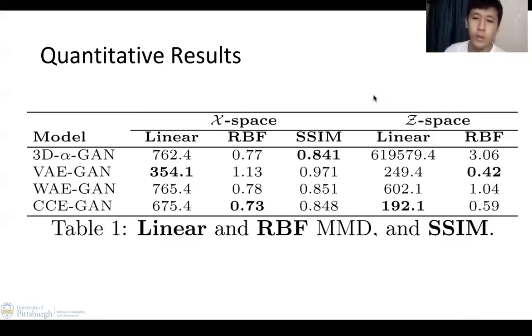We also used another metric called structural similarity. The closer that the SSIM score is to the structural similarity of the real distribution, the better it is for the model. Our model's SSIM in this case is 0.839, but the best model here is 3D-alpha-GAN.